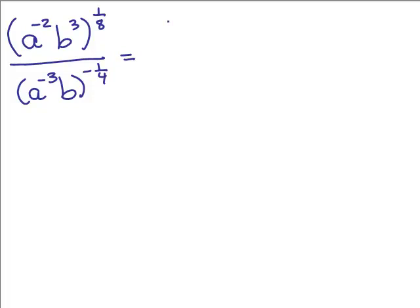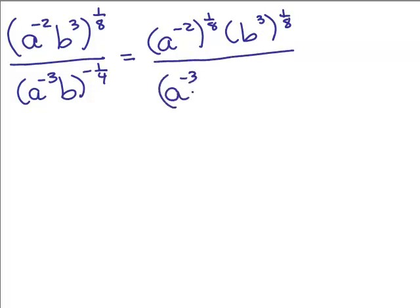So I'm going to have a to the negative 2 to the 1 eighth, and b cubed to the 1 eighth, and in the denominator I'm going to get a to the negative 3 to the negative 1 fourth, and b to the negative 1 fourth. So let's simplify each of the exponents by multiplying using the law of exponents.